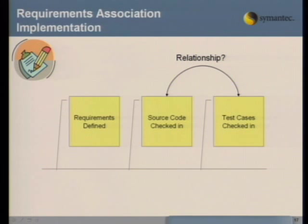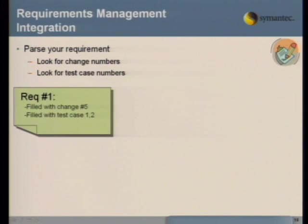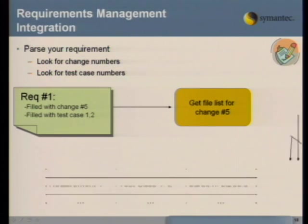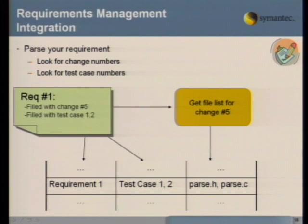For the requirements association implementation: we're looking for a relationship between source code checked in and test cases checked in per requirement. Parse your requirements — assuming you have programmatic access to these databases — and look for the change numbers and the test cases associated with those requirements. Assuming you have commit numbers for your source control system, you can grab the file list for that requirement and say, with some certainty, these test cases are associated with these source files.